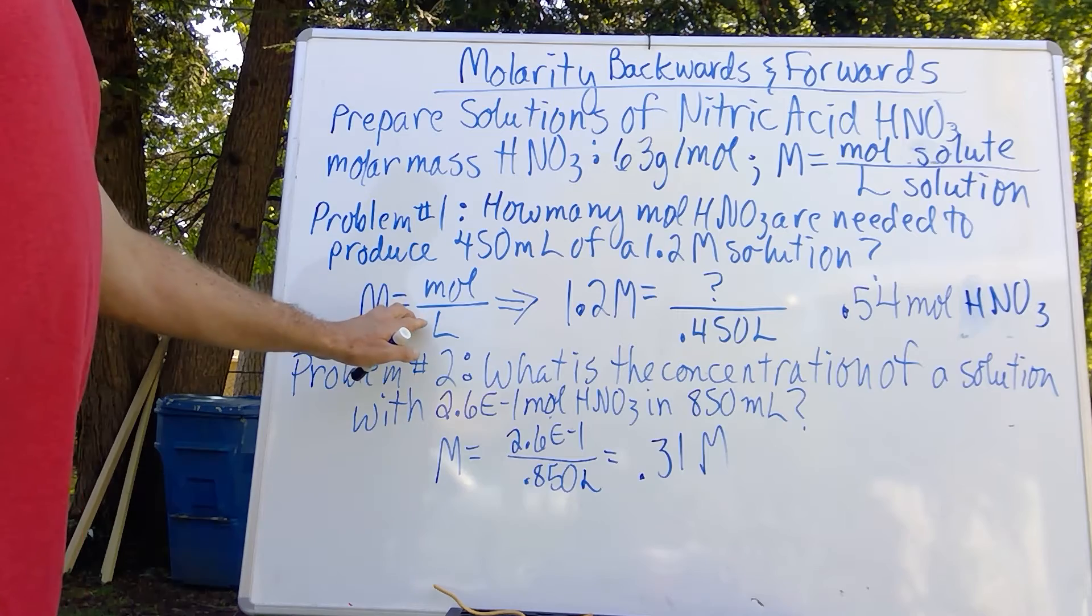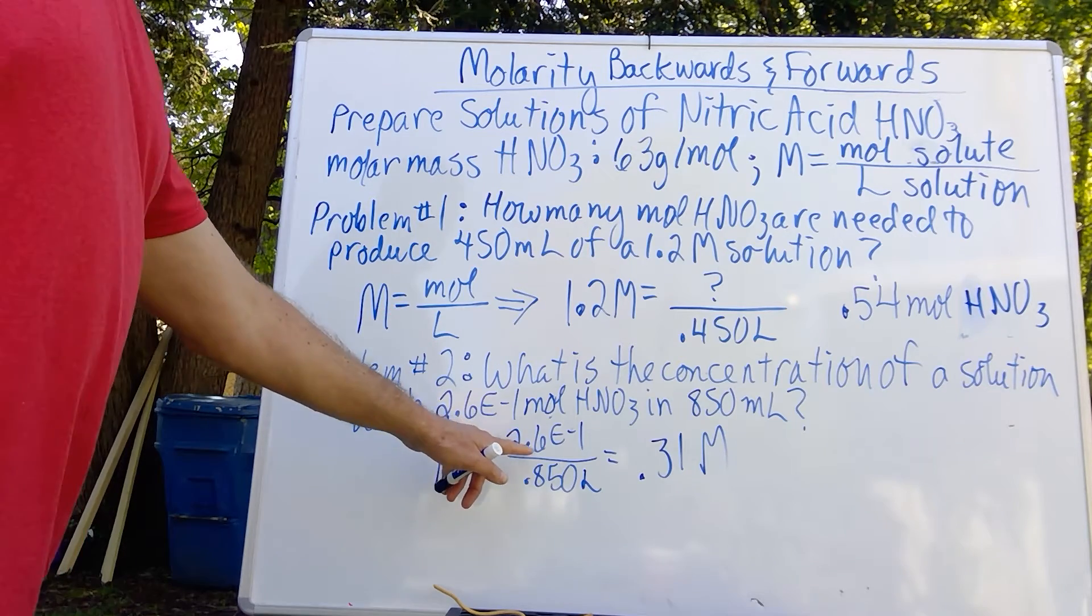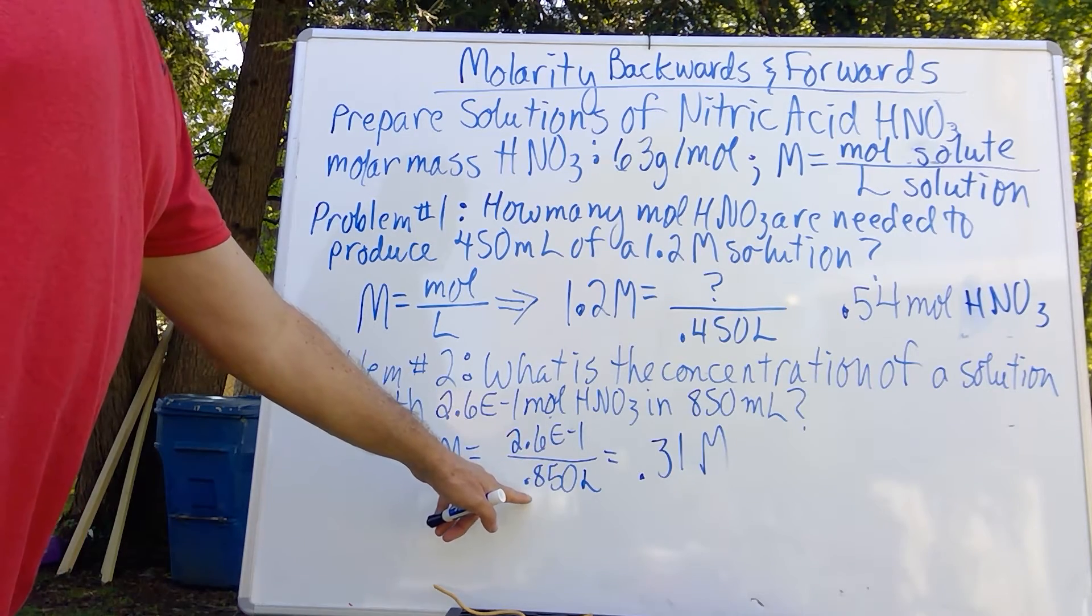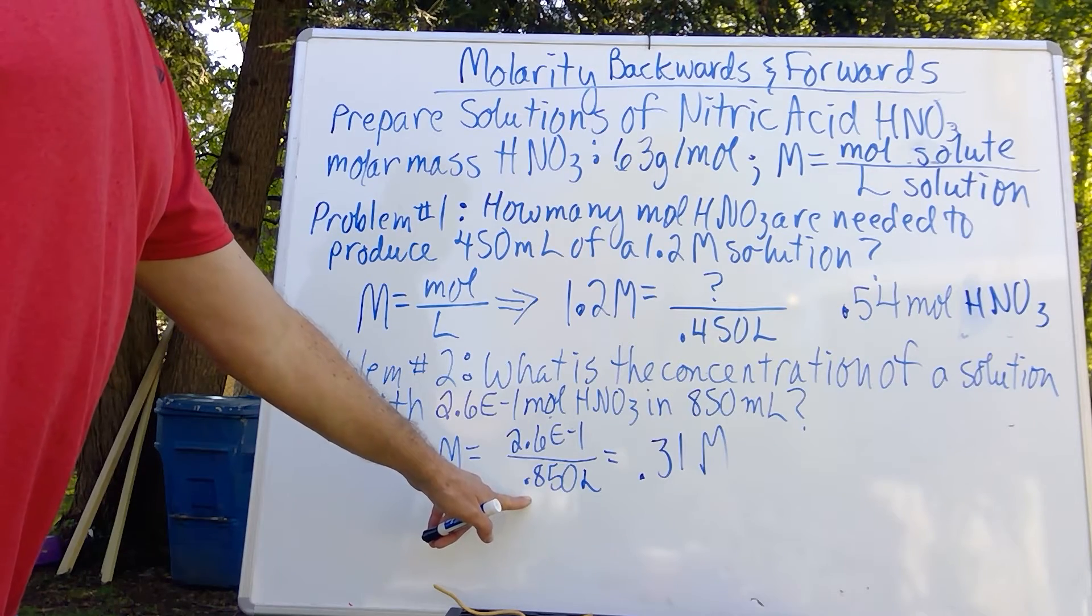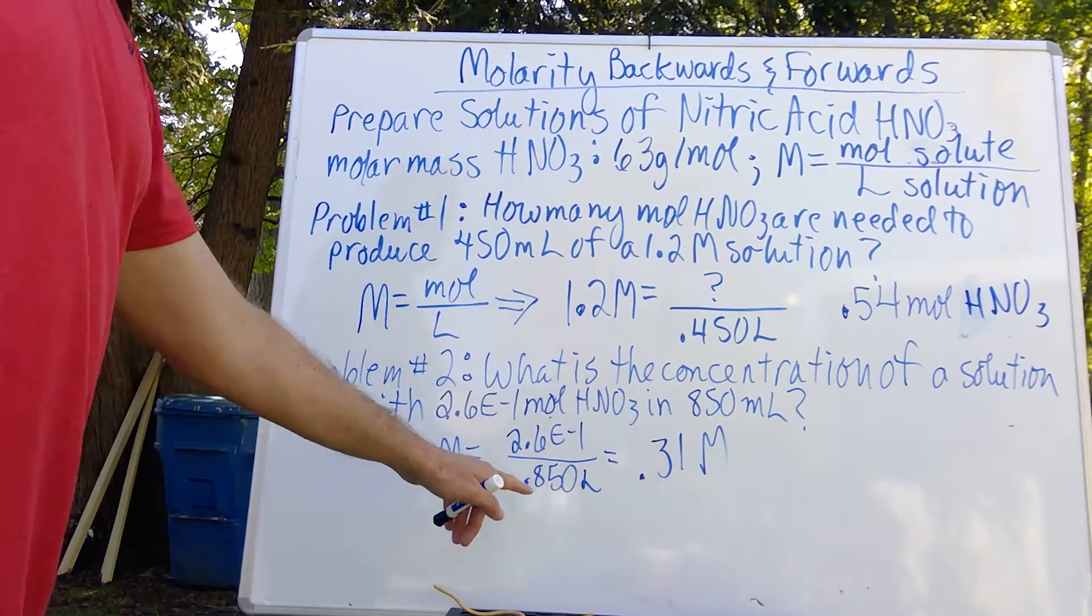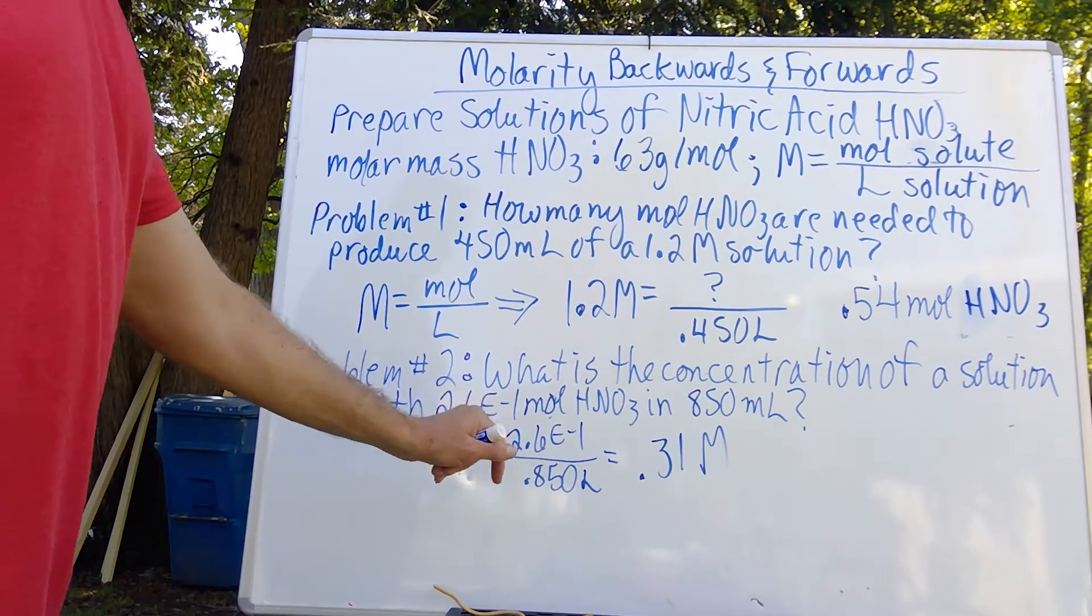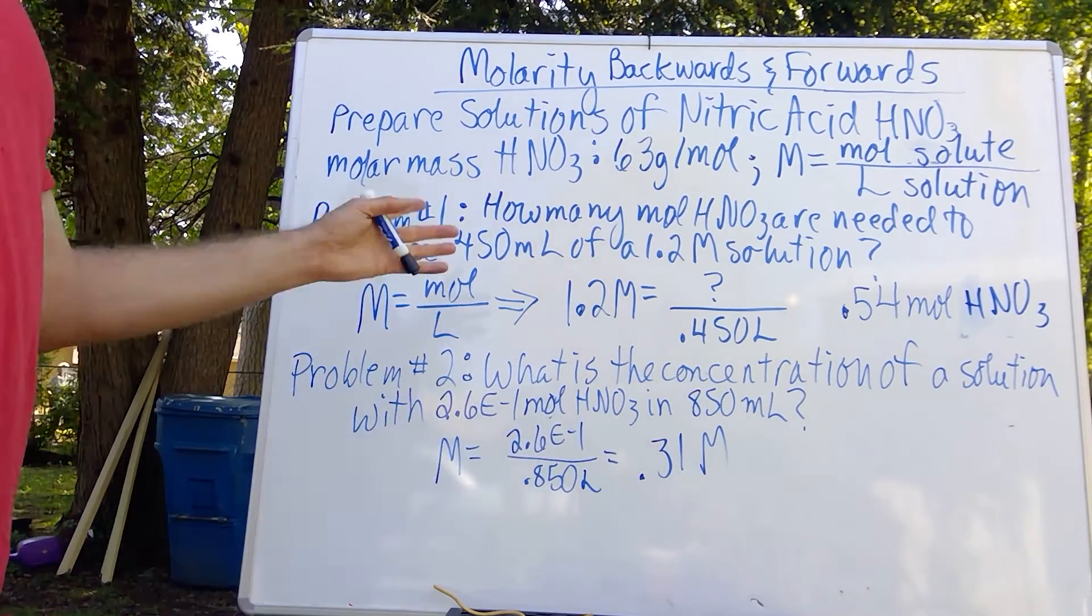We once again take our molarity formula, we take moles over liters of solution, notice that I've converted the milliliters to liters by moving the decimal three places to the left, and we get a concentration of 0.31 moles.